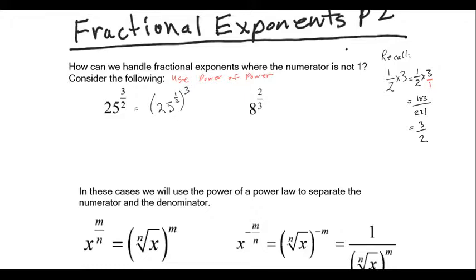You know that one-half times three gives us three-halves, just like we calculated at the beginning. So we have 25, and we write the second root of 25 raised to the exponent three. Now we end up with five to the three, and we get 125.